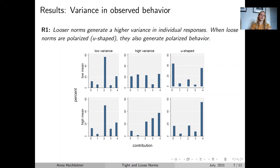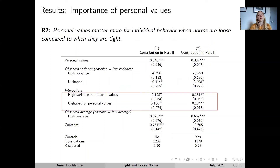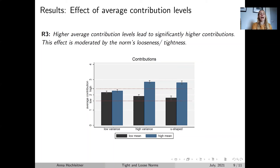This leads me to the second result, which shows that personal values matter more for individual behaviour when norms are loose than when they are tight, and this is confirmed in a regression analysis. As you can see here in red, in the case of loose norm treatments, personal values have a much bigger influence than in the case of tight norm treatments. Then finally, confirming previous research, we also show that high mean treatments — here in blue — lead to significantly higher contribution levels. Interestingly, we also find that this effect is mediated by the norm's looseness or tightness. In particular, it seems we only see this mean effect in high variance or loose norm treatments.